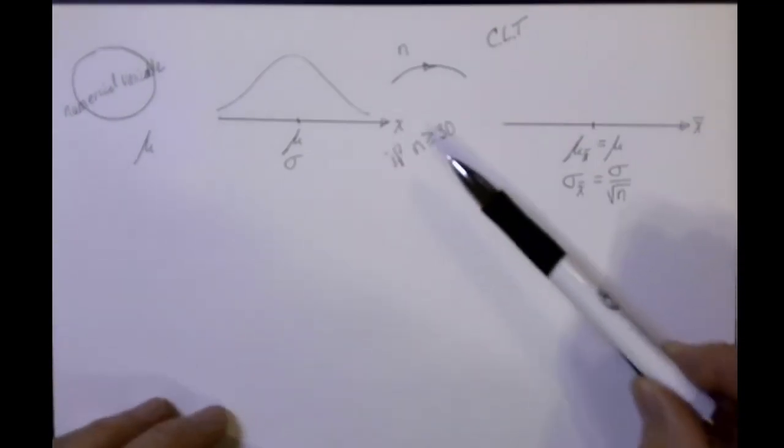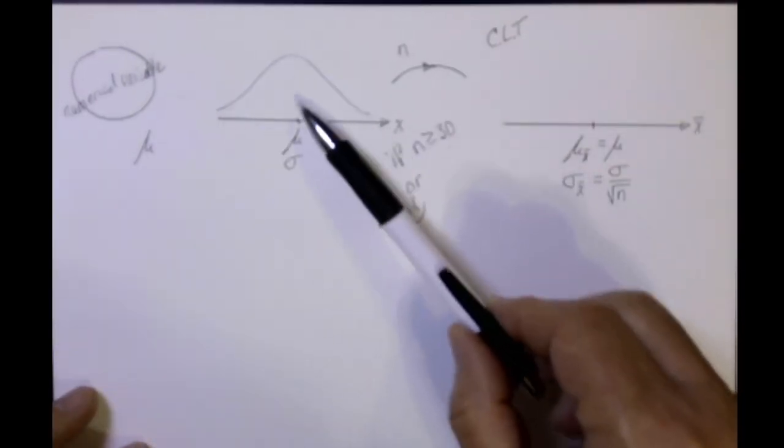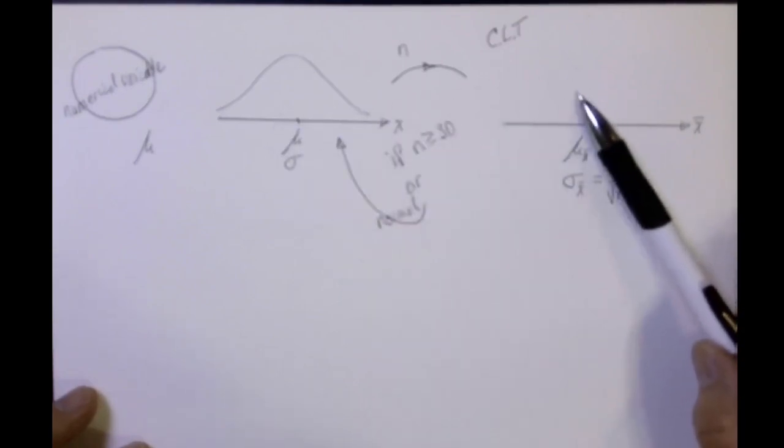If n is greater than or equal to 30, this distribution is going to be normally distributed. Or if the original population was normally distributed, this will be normally distributed.